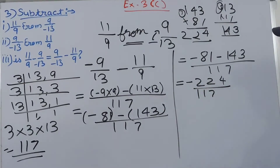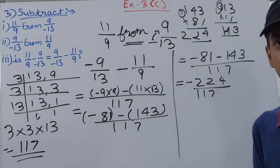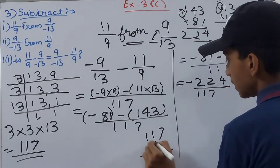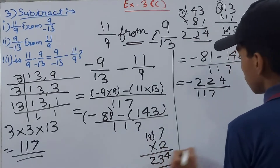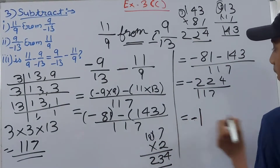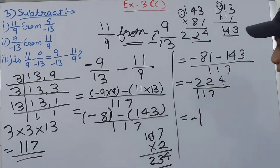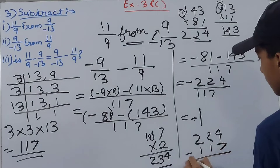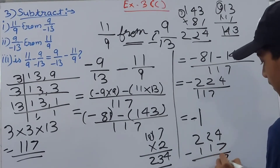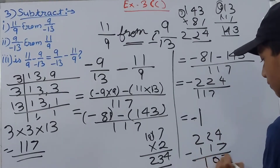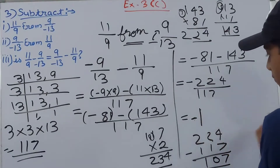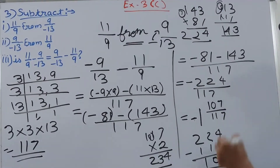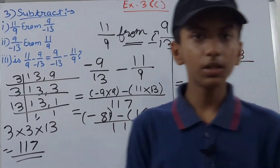Now let's convert −224/117 into mixed form. We check: 117 × 1 = 117, and 117 × 2 = 234, which is too large. So the whole number part is 1. Subtracting: 224 − 117 = 107. Therefore the answer is −1 whole 107/117.